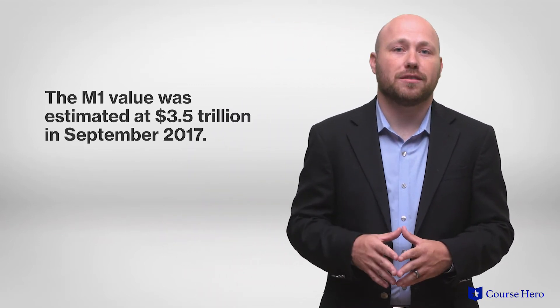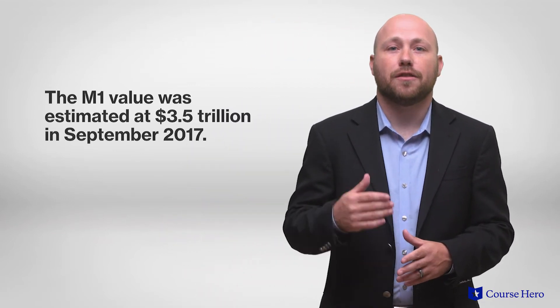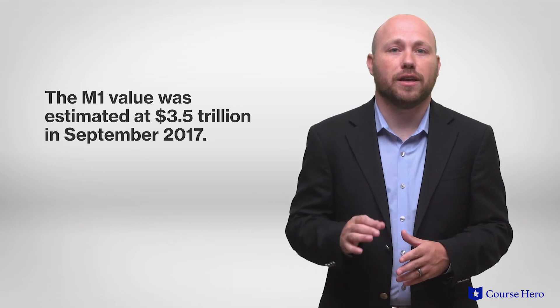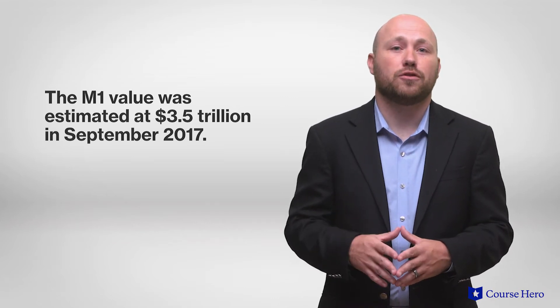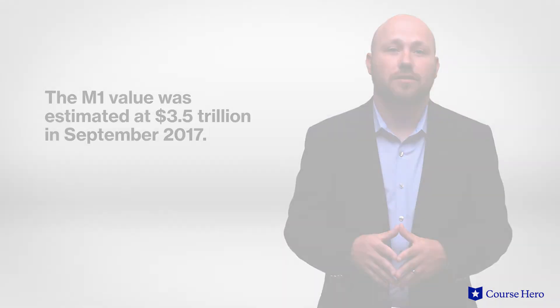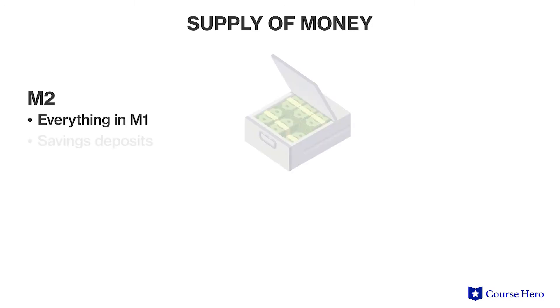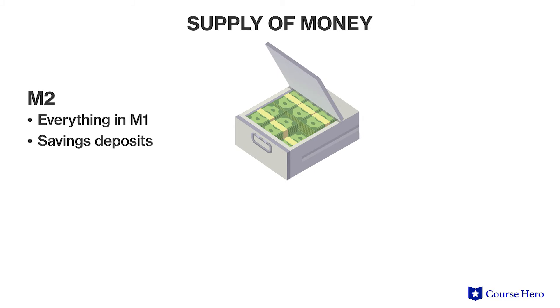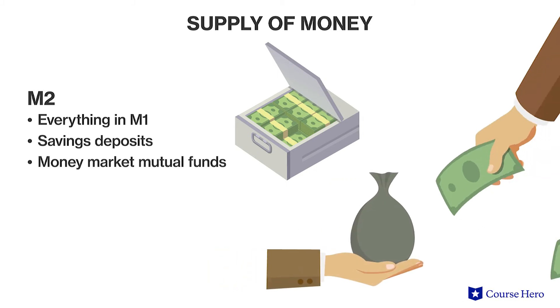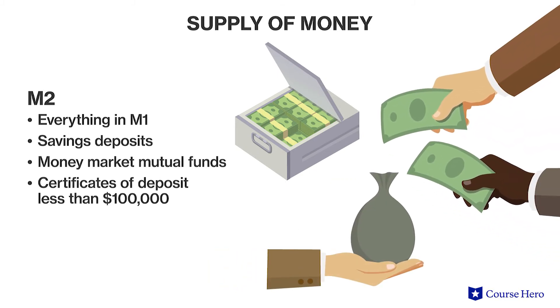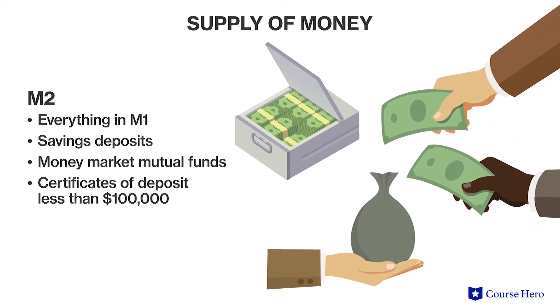In September of 2017, the Federal Reserve estimated the value of M1 to be $3.5 trillion. The definition of M2 is much broader — it includes everything in M1 along with savings deposits, money market mutual funds, and certificates of deposit less than $100,000.